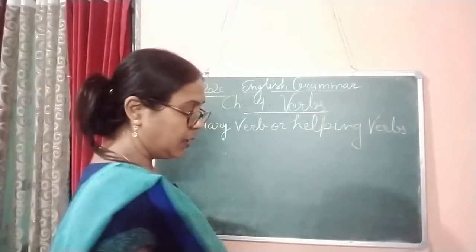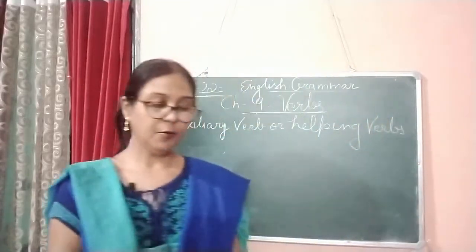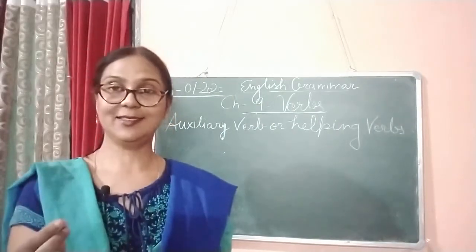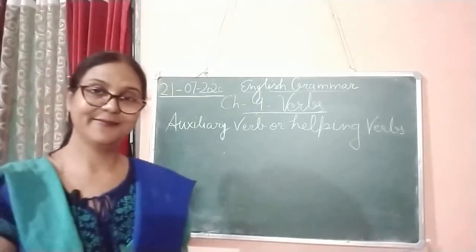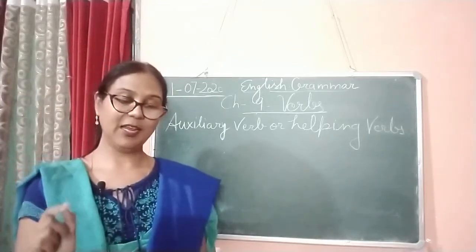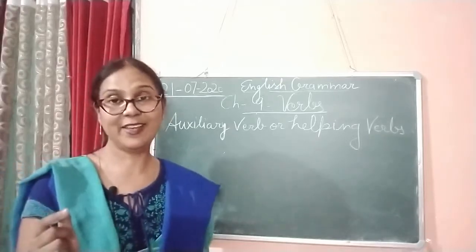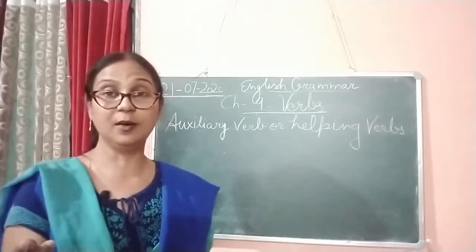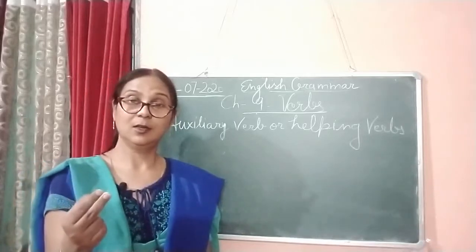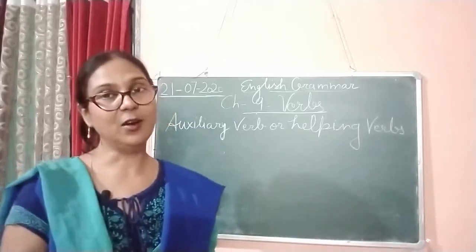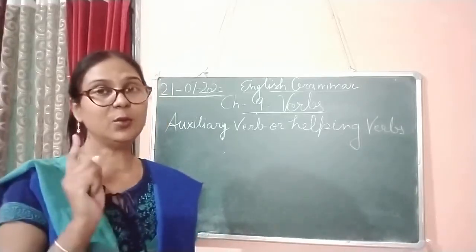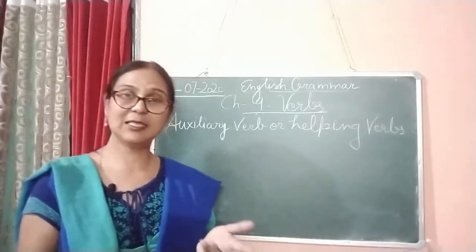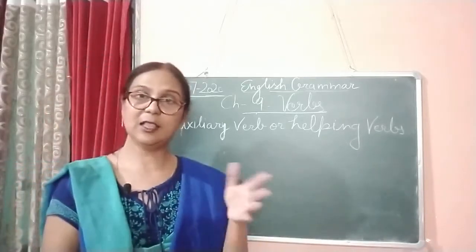A verb used in forming the tenses, moods, and voices of other verbs is called an auxiliary verb. The primary auxiliary verbs in English are: be, do, have, has. For modal auxiliary verbs: can, could, will, would, shall, should. There are two kinds of auxiliary verbs. Primary auxiliary verbs are: is, am, are, was, were. And modal auxiliary verbs have a different set: can, could, shall, should, will, would.